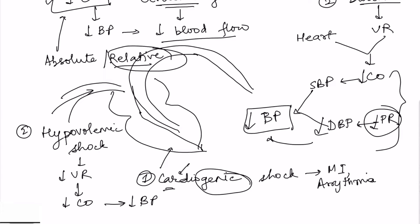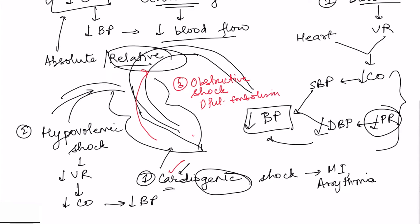Third, the heart may be pumping properly but blood is not able to flow out — that is known as obstructive shock, because blood flow should be smooth. Causes of obstructive shock include pulmonary embolism, where blood is not able to flow from the pulmonary circulation into the systemic circulation.